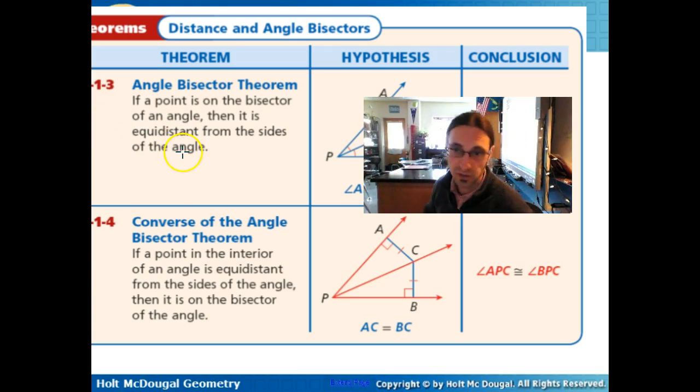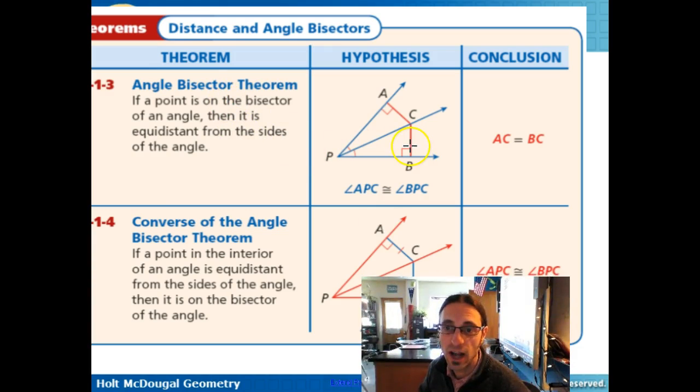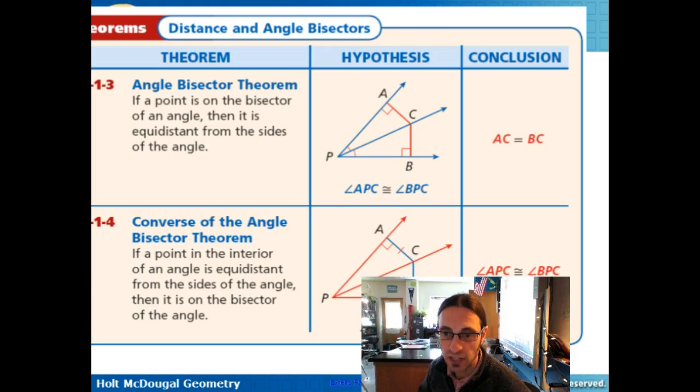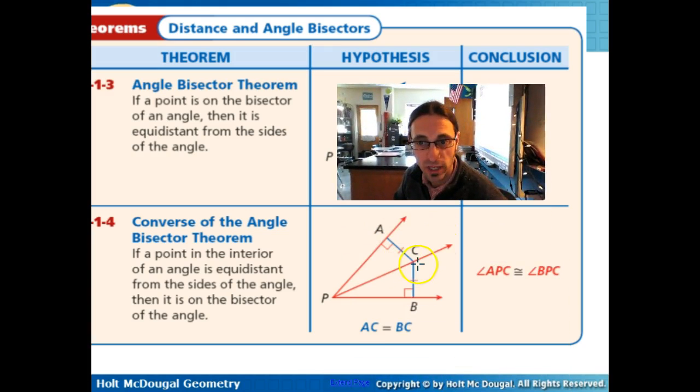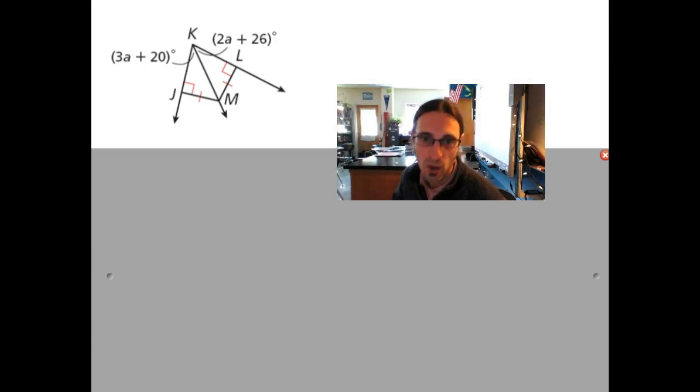What does that mean? Well, those are your next two set of theorems. Angle bisector states, hey, if you're on an angle bisector, then it's equidistant from the sides. The converse of that says, hey, if you've got a point that's equidistant from the sides, then you're on the angle bisector. Well, so what? What does this matter?